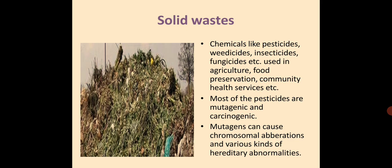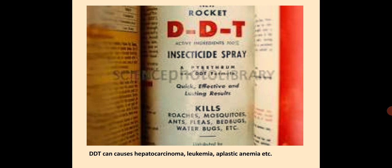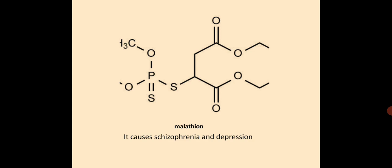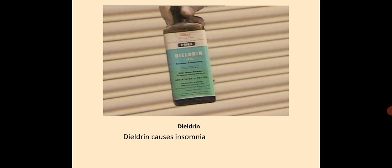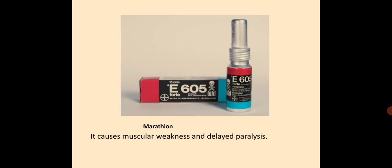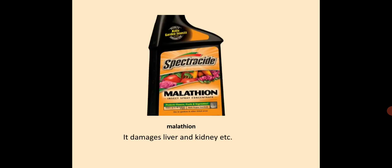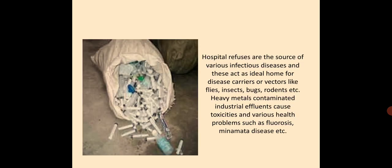Mutagens can cause chromosomal aberrations and various kinds of hereditary abnormalities. Certain chemicals are hazardous to health: DDT can cause hepatocarcinoma, leukemia and aplastic anemia. Malathion causes schizophrenia and depression. Dieldrin causes insomnia. Malathion also causes muscular weakness and delayed paralysis, and damages the liver and kidney. Hospital waste is a source of various infectious diseases and acts as an ideal home for disease carriers or vectors like flies, insects, bugs and rodents. Heavy metals in contaminated industrial effluents cause toxicities and various health problems such as fluorosis and Minamata disease.